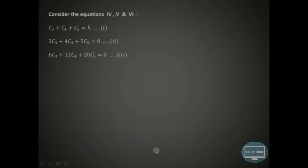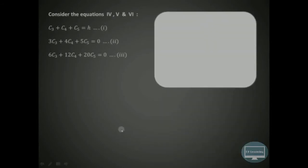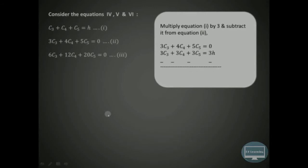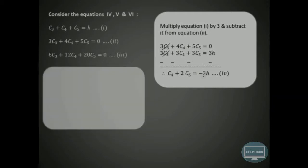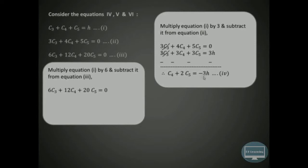We now solve the three simultaneous equations: C3 + C4 + C5 = H (eq.1), 3C3 + 4C4 + 5C5 = 0 (eq.2), 6C3 + 12C4 + 20C5 = 0 (eq.3). Multiply equation 1 by 3 and subtract from equation 2 to eliminate C3: (4−3)C4 + (5−3)C5 = 0 − 3H, giving C4 + 2C5 = −3H (eq.4). Similarly multiply equation 1 by 6 and subtract from equation 3 to eliminate C3 again.